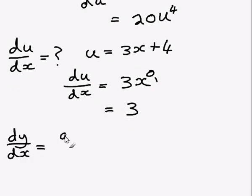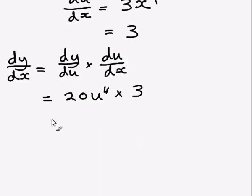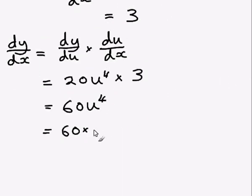But now we know what both of these terms are. So instead of dy/du, we can write 20u to the power 4, and instead of du/dx, we can just write 3. Now the tricky thing to do here is remember that u is actually a function itself. So first I'll multiply the 3 by the 20—we get 60u to the 4. But instead of u now, we can sub back in what u is equal to. So u equals 3x plus 4, so instead of writing u, I'm going to write 3x plus 4, and remember it's all raised to the power 4.